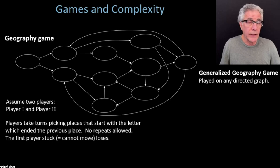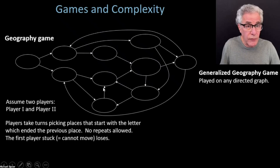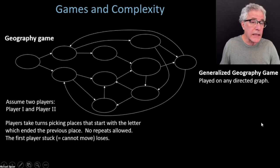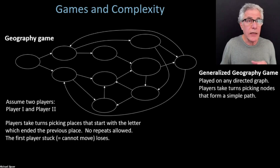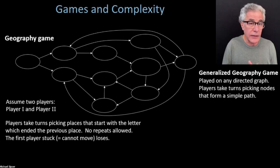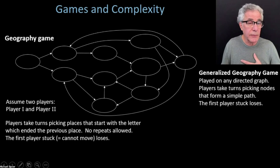Today we're going to look at a generalized version of that where we take away the names but just leave the underlying graph — we're calling that generalized geography. This can be played on any directed graph. You designate a particular node as the starting node, and then the players take turns following those edges. Because you forbid reusing any nodes, you end up constructing a simple path in that graph. The first player to be stuck is the loser.